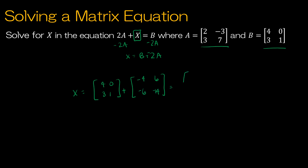Then I just add those together, which gives me 0, 6, negative 3, negative 13. So this would be my final solution for X.